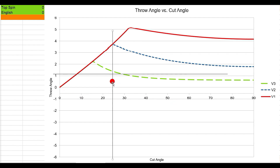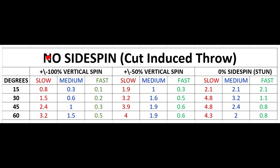Going through all the graphs, we can summarize the values in a chart. This is for no sidespin — cut-induced throw. The chart covers cut angles of 15, 30, 45, and 60 degrees, with 100% vertical spin, 50% vertical spin, and a stun shot, each showing throw amounts for slow, medium, and fast speeds. Notably, at 15 degrees, the amount of throw is the same for slow, medium, and fast across all spin types.